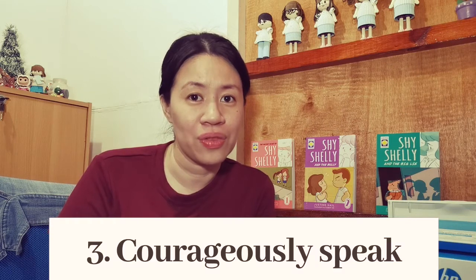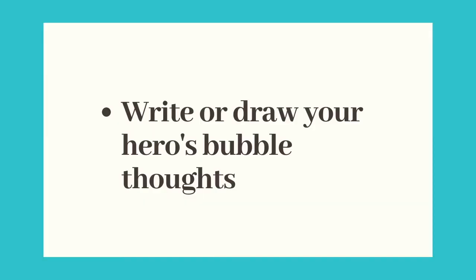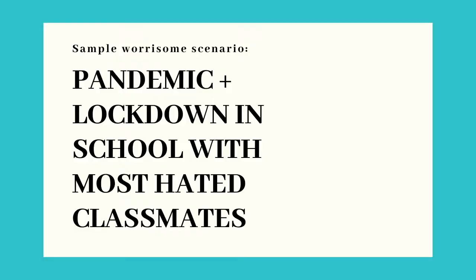The last step is to courageously speak the truth. I want you to grab a piece of paper, and then in the middle of the paper, write down or draw the hero surrounded with bubble thoughts. The bubble thoughts would contain the things going inside the head of your hero. For example, let's say the worrisome scenario you put your hero in is a lockdown situation, and your hero was unable to go home, so he's stuck in school with his most hated classmates.